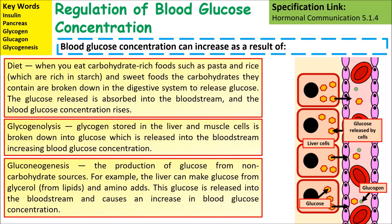Gluconeogenesis: the production of glucose from non-carbohydrate sources. For example, the liver can make glucose from glycerol from lipids and amino acids.